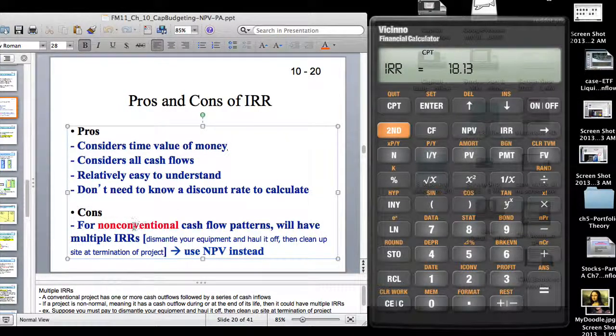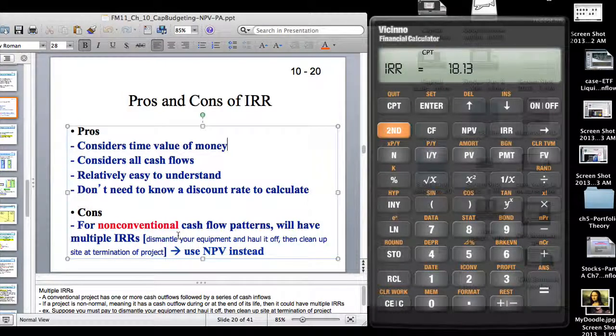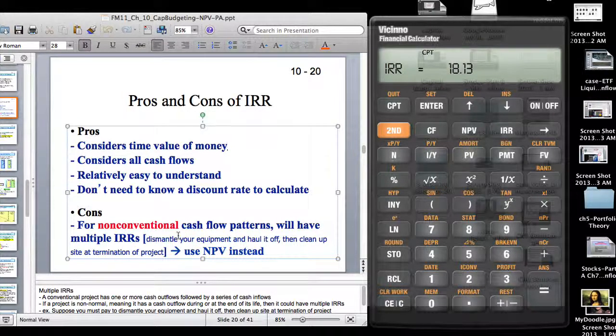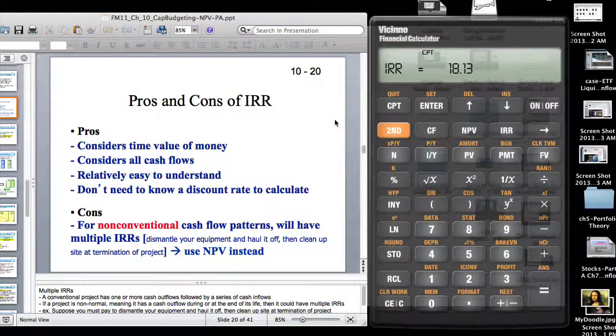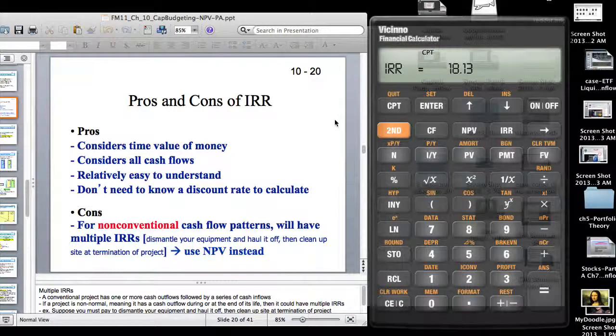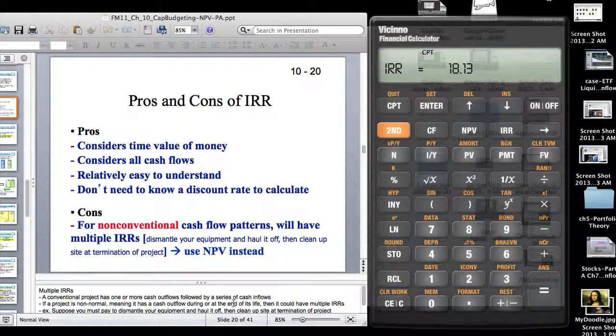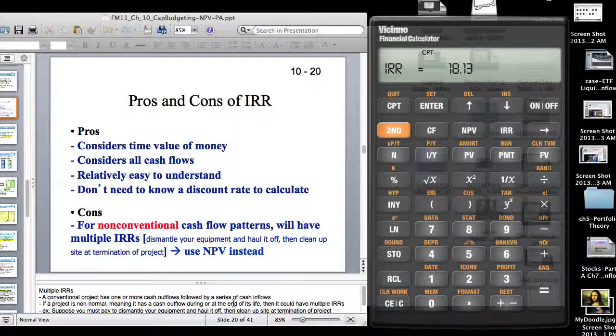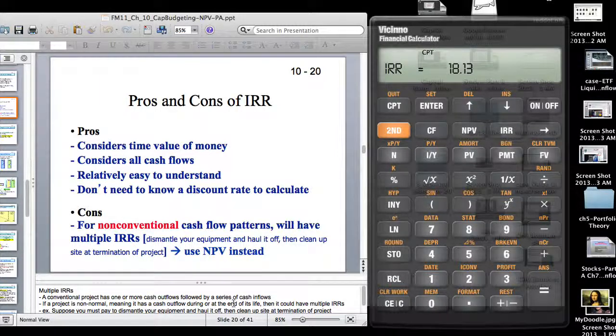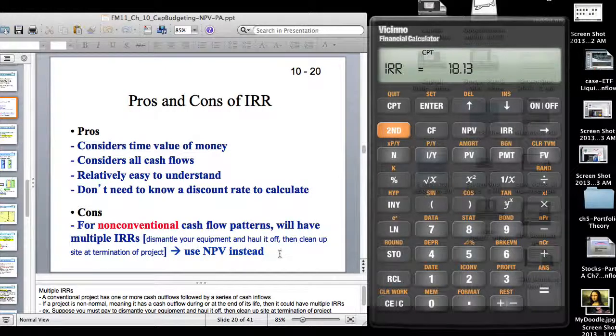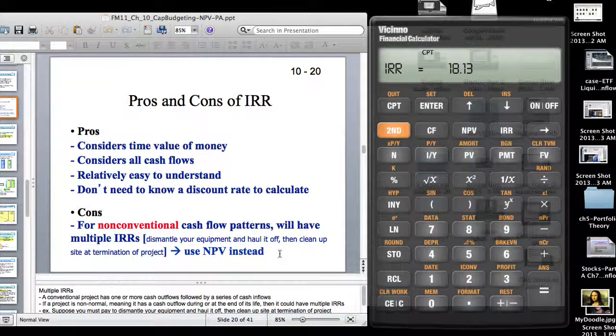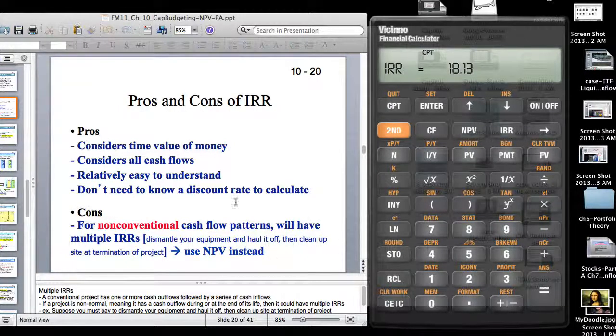The biggest reason why IRR is good is because you don't need to know a discount rate to calculate. It actually gives you the discount rate at which you break even. Of course, there are problems. One of the problems is for non-conventional cash flow patterns, you'll have multiple IRRs. Non-conventional cash flow pattern is basically where there's a change in sign.